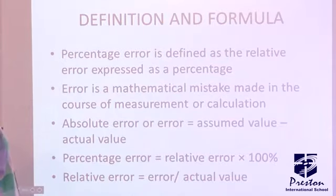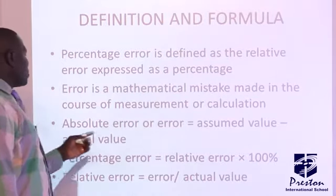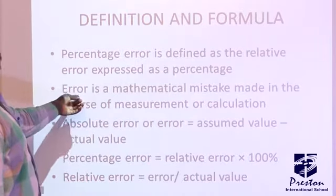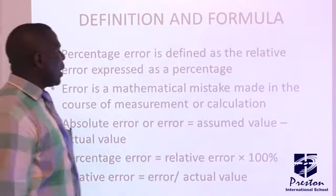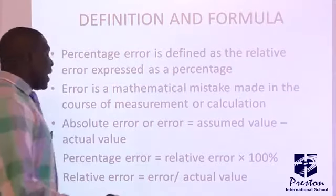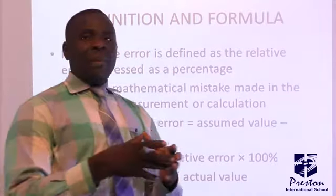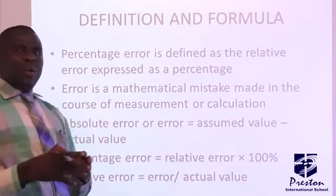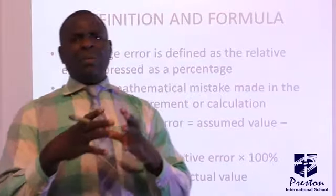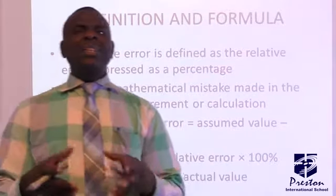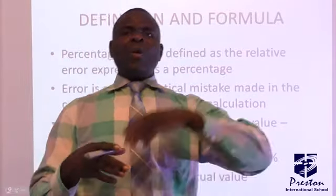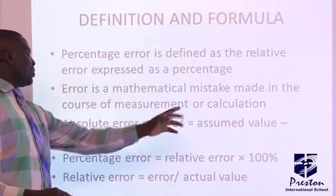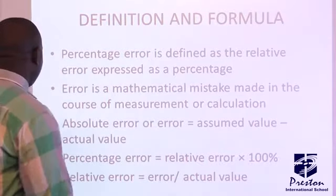We are talking of absolute error here. Absolute error is the assumed value minus the actual value. The actual value is the accurate value. But as a result of mistakes, you later end up having a different value. So if you want to get the error, it is assumed value minus actual value.